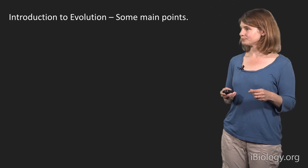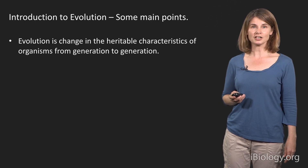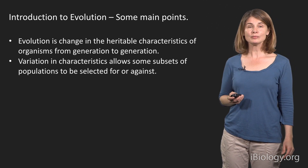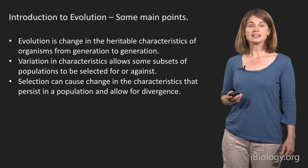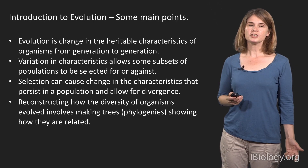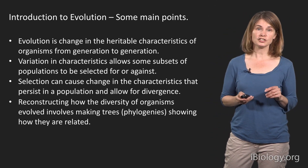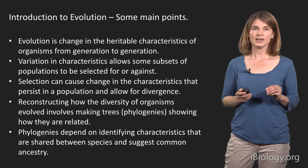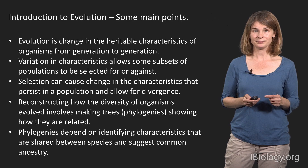To summarize our introduction to evolution: first, evolution is change in the heritable characteristics of organisms from generation to generation — descent with modification, as proposed by Darwin. Variation in characteristics allows some subsets of populations to be selected for or against, and selection can cause change in the characteristics that persist in a population, allowing populations to diverge. Reconstructing how the diversity of organisms evolved involves making trees, or phylogenies, that show how different organisms are related to one another. Phylogenies depend on identifying characteristics that are shared between organisms that can suggest their common ancestry, and we can get those characteristics from morphology, from genes, and from all sorts of different sources. Thank you.